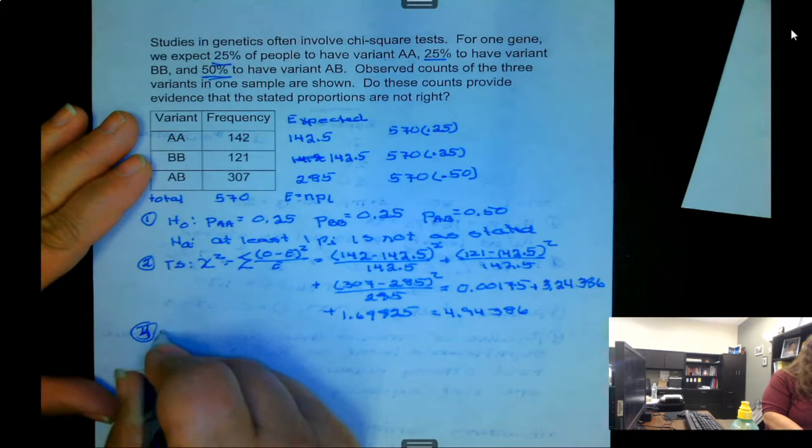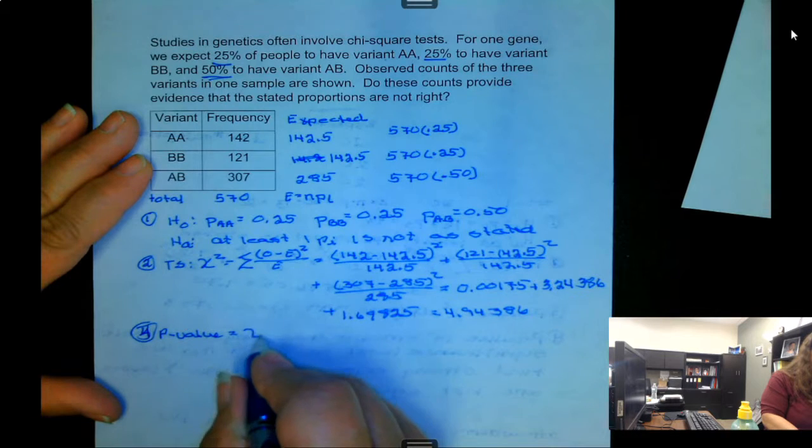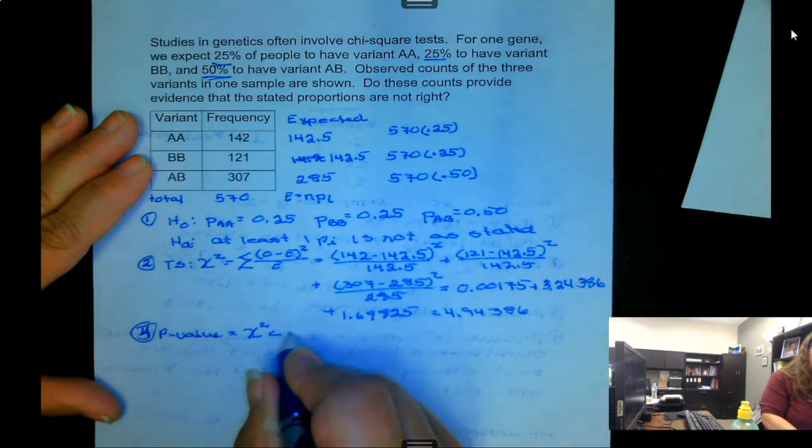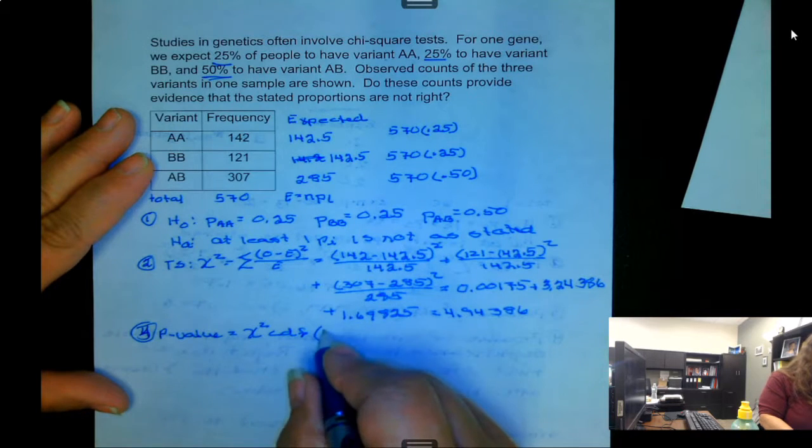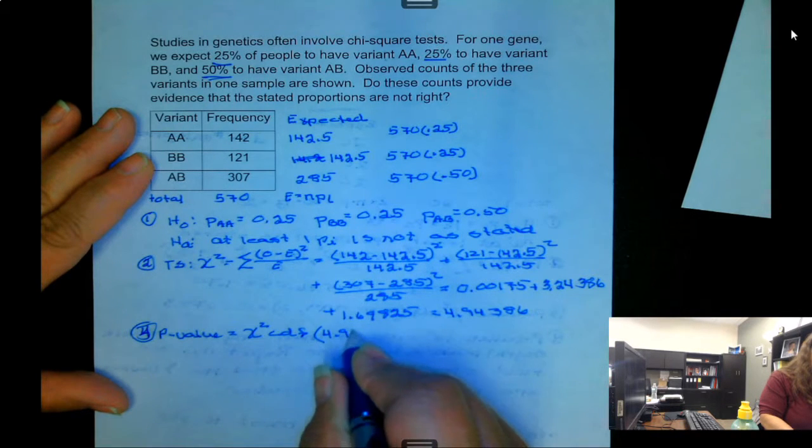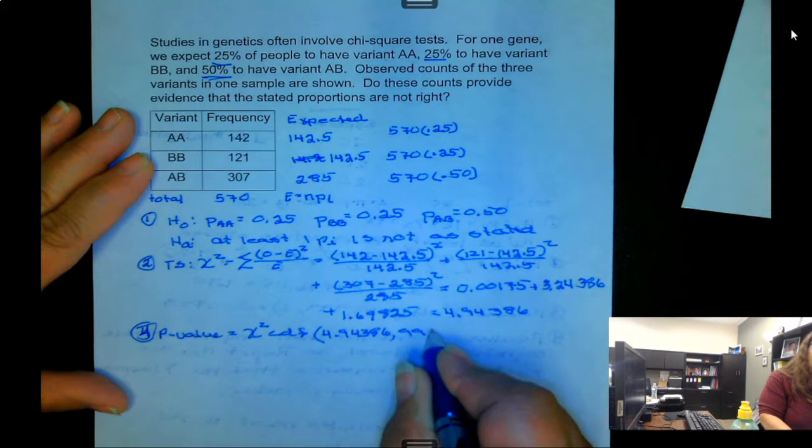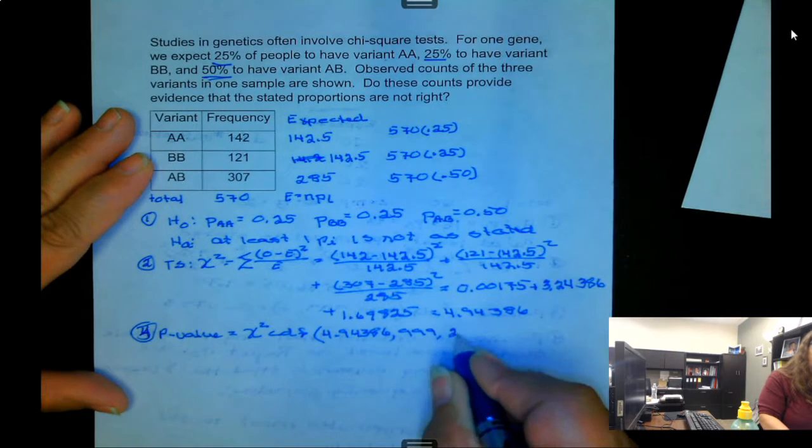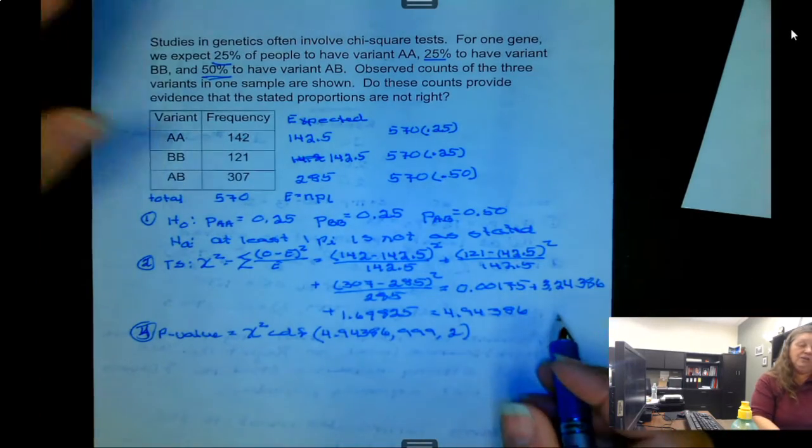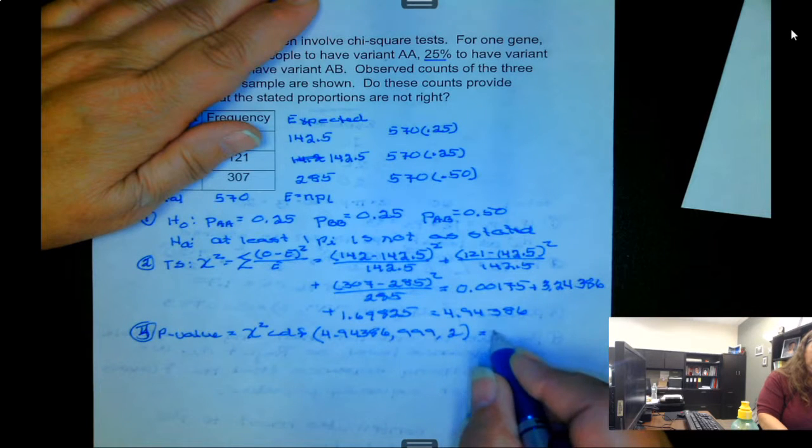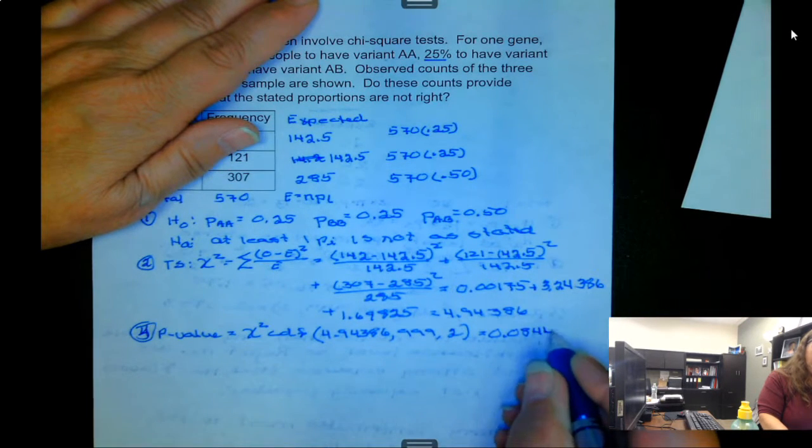So our p-value: chi-square CDF of 4.94386, 999, and again it's two degrees of freedom because we have three categories and three minus one is two. This gives us 0.0844.